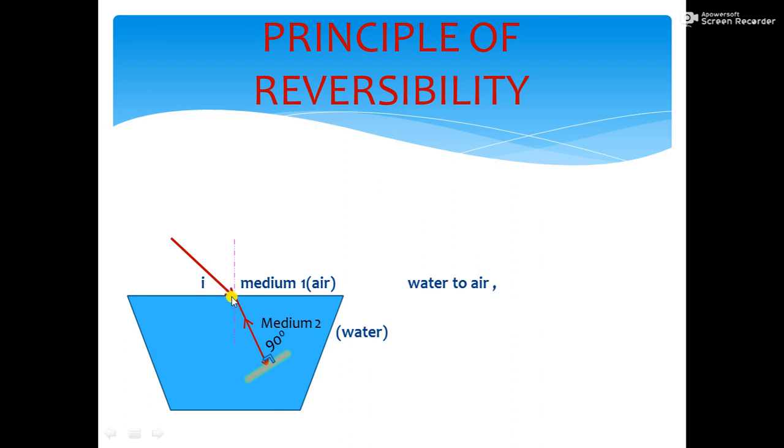In this case, it bends away from the normal, but follows the same path in opposite direction. It is a proof that the light ray is reversible.